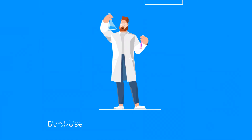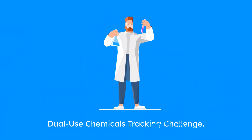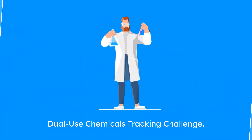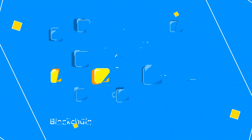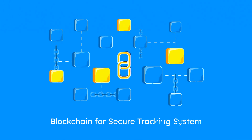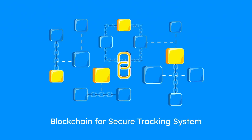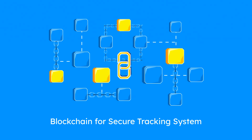The challenge is end-to-end tracking of dual-use chemicals. By using blockchain technology and secure databases, you can develop a robust tracking system without the need to dive into hardware or chemical processes.